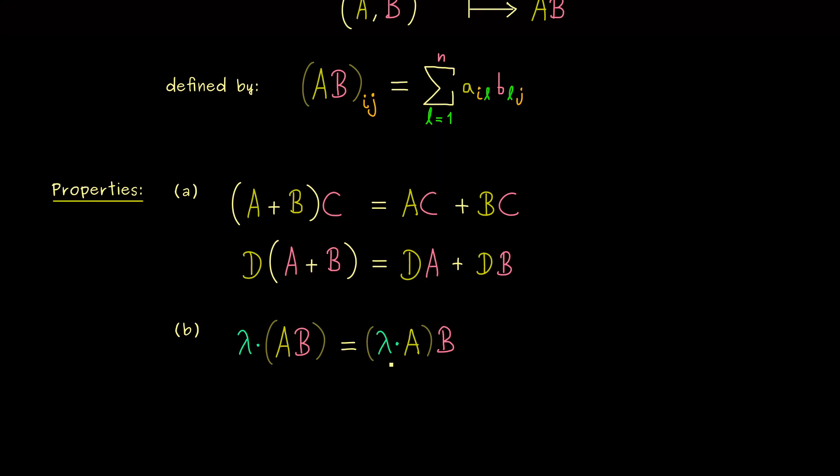Moreover, you might already guess here, it's also possible to first calculate the scalar multiplication with b. So this would be a in the matrix product with the new matrix lambda times b. So we learn here, all these three combinations how to apply the scalar multiplication to the matrix products give the same result.